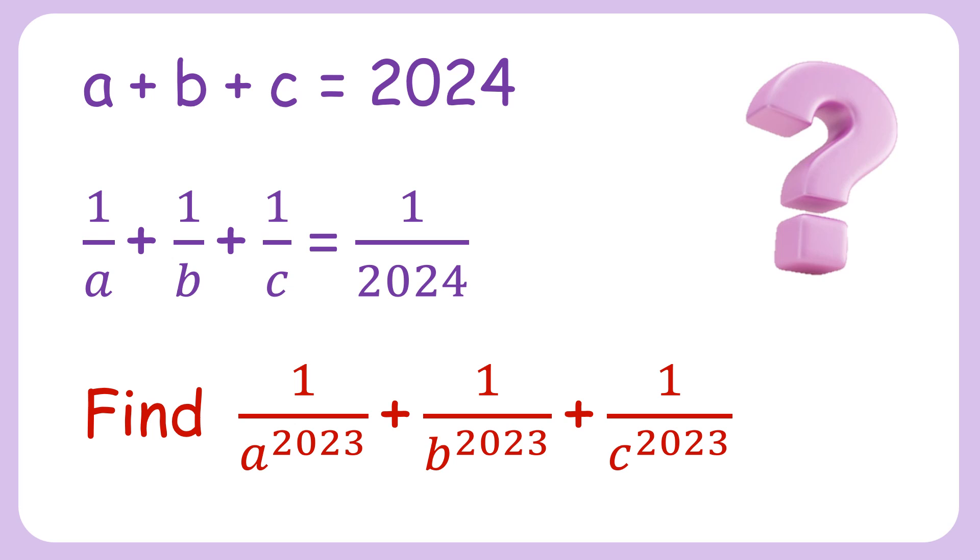Welcome everyone. In this interesting question, given the sum of three variables is 2024 and the sum of reciprocals of these variables is 1 over 2024, using this limited data we have to find the value of this particular expression.